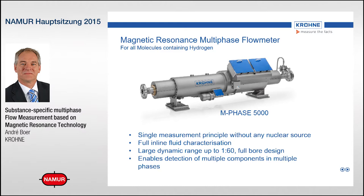Magnetic resonance multiphase is a measurement principle which is actually quite new. It works very well with all those metals, liquids, and gases that contain hydrogen molecules — hydrogen protons, as I will show you a little bit later. Once you have that, it is a very nice and elegant way of measuring multiphase flow, because it's a single measurement principle and it doesn't need any nuclear source, which is in many cases nowadays necessary.